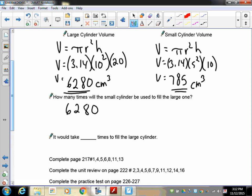So we have 6,280 or 6,280 divided by 785, which means it's going to take 8 times. Doesn't that work out well?